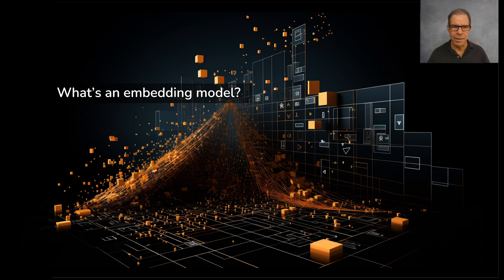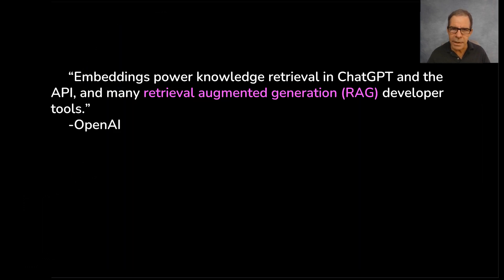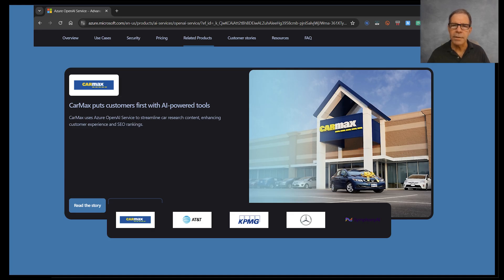What is an embedding model and what's it used for? Embedding models are what actually enable information retrieval in ChatGPT, in the developer API, and within Retrieval Augmented Generation, which I'll refer to as RAG. They're quite important. RAG is what we use when we deploy generative AI inside a specific company like CarMax, Mercedes-Benz, or AT&T — their own private version of GPT connected to all their own private information, not shared outside.